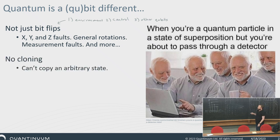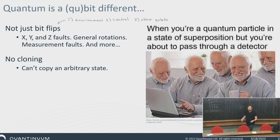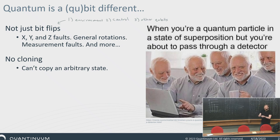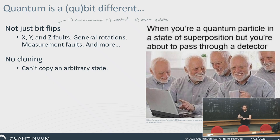We also have to deal with the annoying no-cloning theorem — for a general state, you can't create a perfect copy. So we can't just copy the bits like we did classically, going 000 or 111. We have to do something smarter and different. We also have to deal with measurement collapse — if we measure an observable, it projects us to something and effectively collapses us to a definite state. That's not good if we're doing a general computation where we want to keep the quantum evolution going.